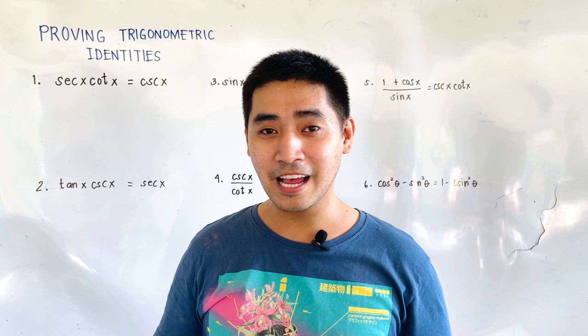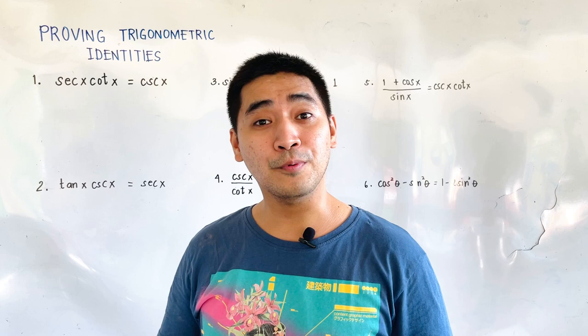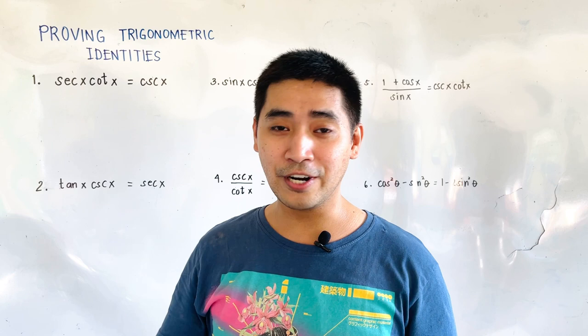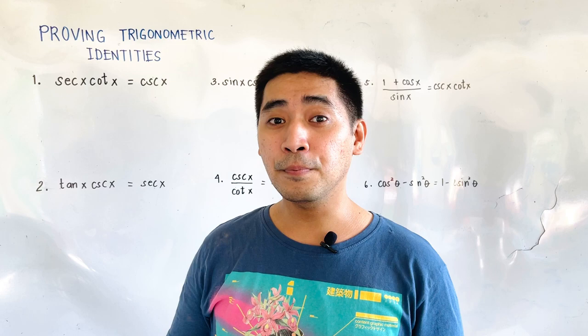In this lesson, we will be using what we have learned from trigonometric identities, because those identities will be substituted into different terms so that we will be able to know if the left side is equal to the right side. If the left side is equal to the right side, therefore we are able to prove a trigonometric identity.